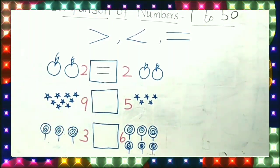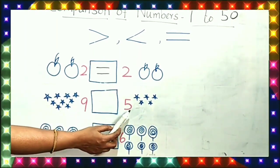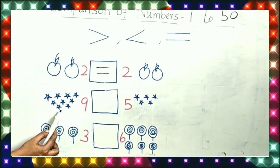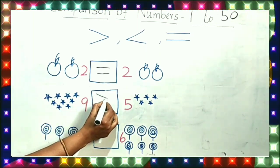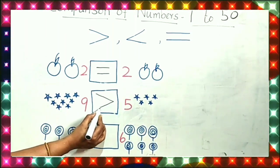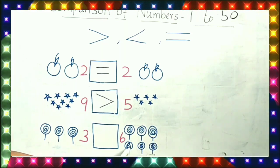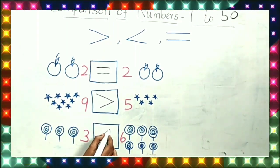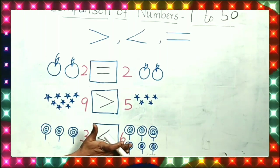Now see the next one. How many stars here? Nine stars. This side, how many stars? Five stars. Now which is more? Nine is the bigger number. Now which side will the crocodile open the mouth? Greater than symbol. Next one, how many lollipops? Three. One more side, how many lollipops? Six. Crocodile wants more lollipops. Now see, what symbol is this? Lesser than symbol. More lollipops are on this side, so the crocodile is opening the mouth toward them.